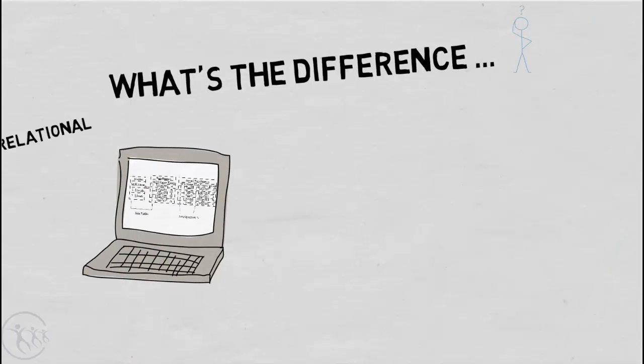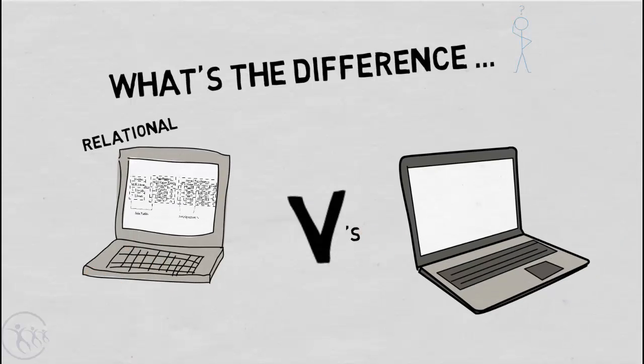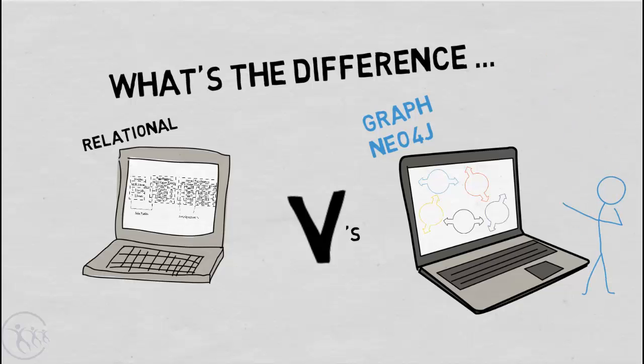Chances are you've come across a relational database. So I'd like to open this tutorial with a short discussion about the features of a typical relational database and those of a graph database, in this case Neo4j. This should help give some context of what Neo4j offers in comparison to a relational database.